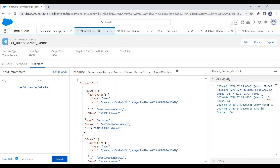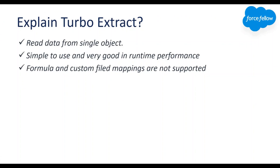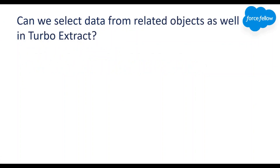Now let's move to the next question: can we select data from related objects in Turbo Extract? We already discussed that we can select data only from parent objects, not from child objects in Turbo Extract.